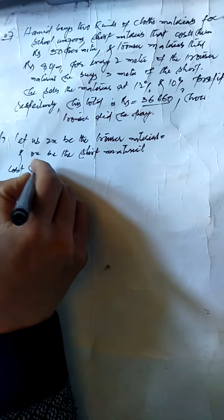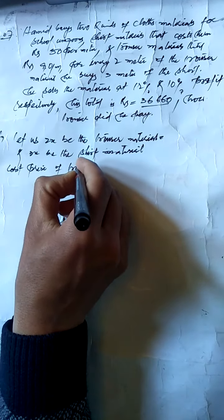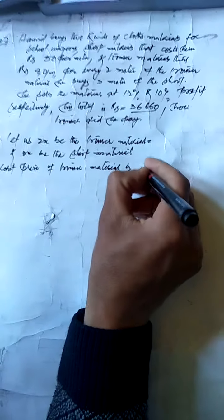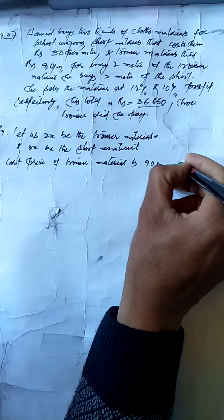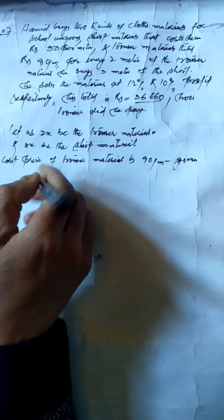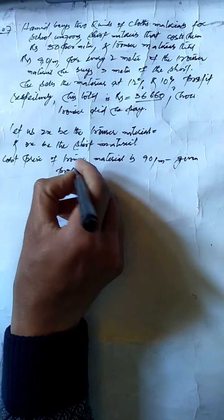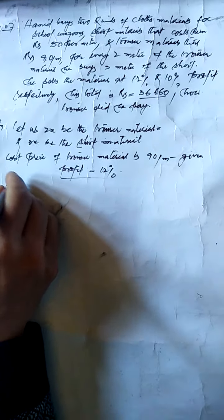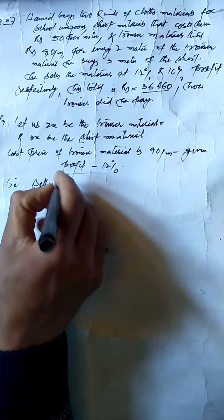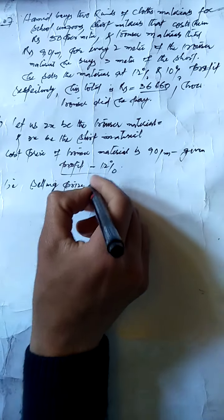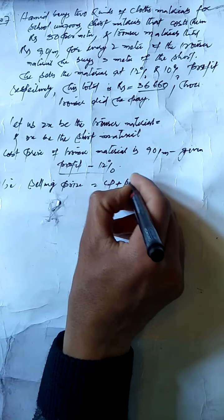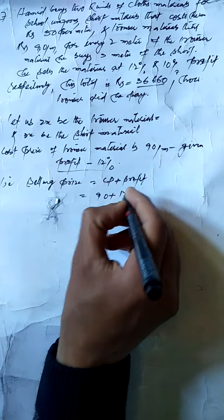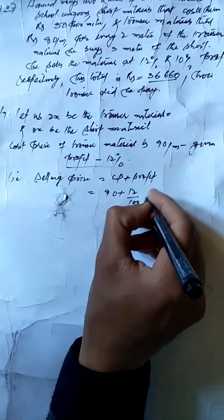Cost price of trouser material is rupees 90 per meter. The profit is 12%. Selling price equals cost price plus profit, so selling price of trouser material equals 90 plus 12% of 90, which is 90 plus 12 divided by 100 into 90.